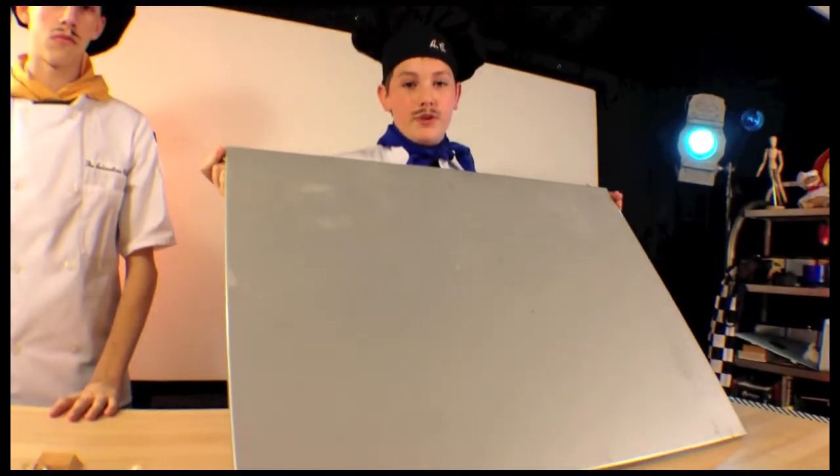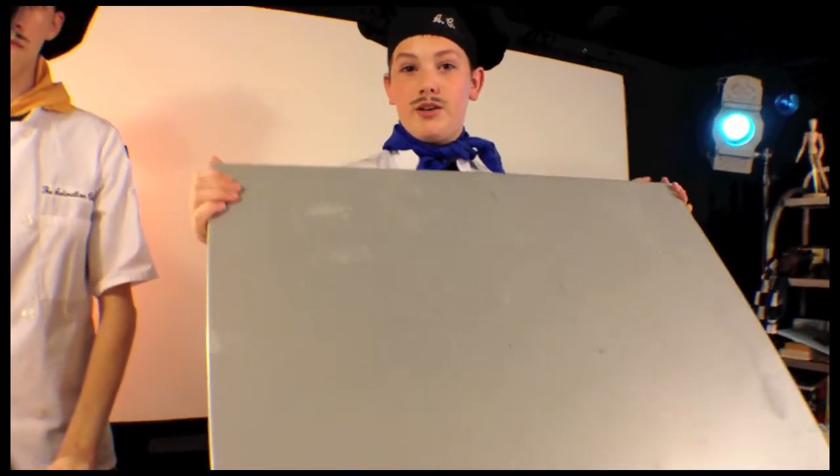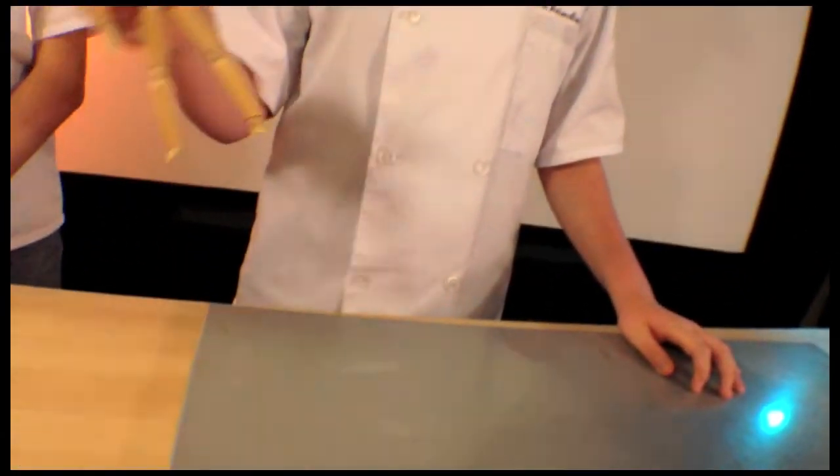Our idea was to use this metal sheet, which we already had, and we would stick magnets onto their feet so they could walk on this. We cut out little footprints from sheet magnets. Then when we tried to do an animation of them walking, the magnets wouldn't hold.